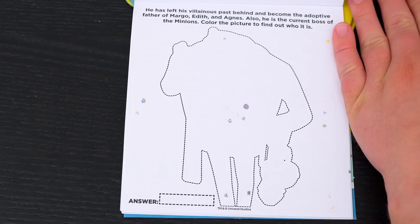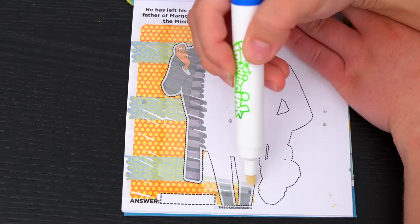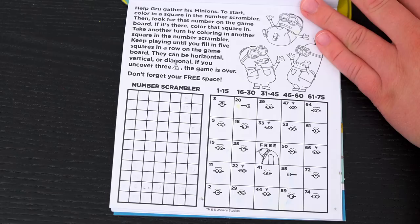He has left his villainous past behind and become the adoptive father of Margo, Edith, and Agnes! Also, he is the current boss of the Minions! Color the picture to find out who he is! Yeah! It's Gru! So awesome!